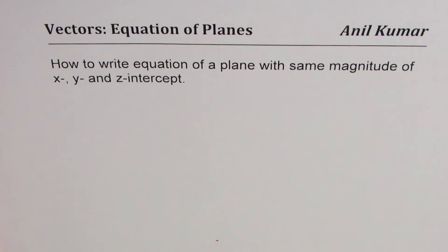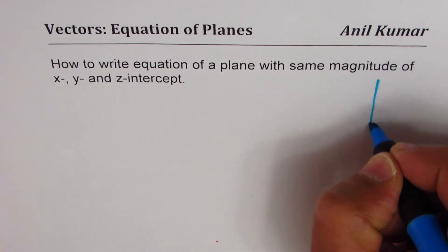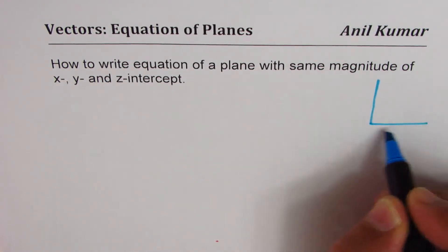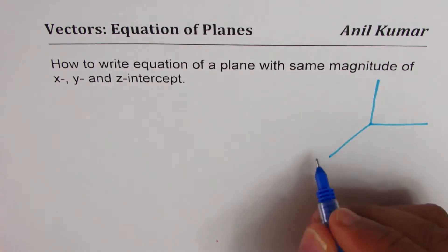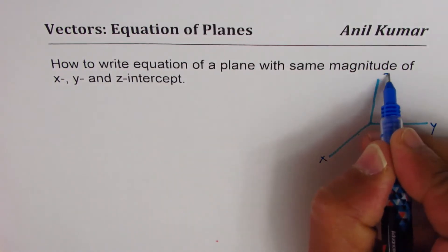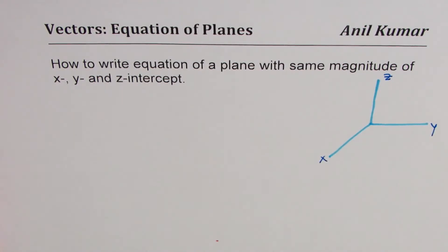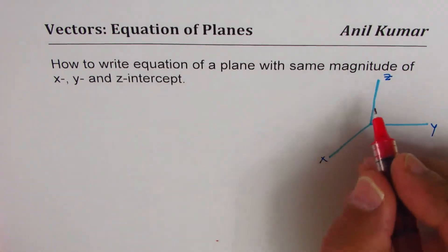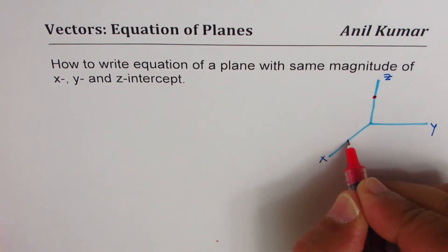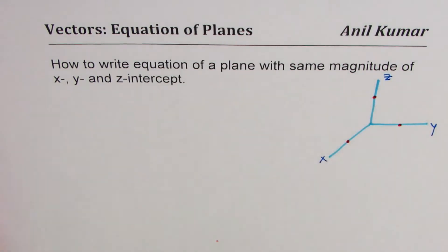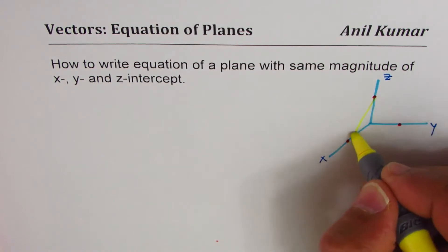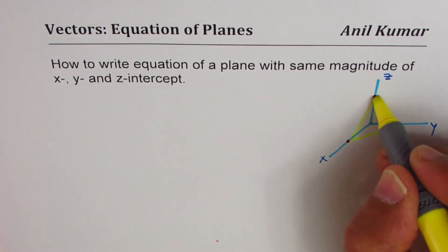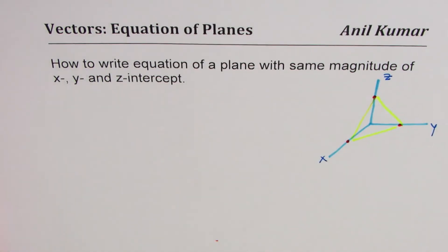Let me first sketch the x, y, z coordinate system. When we say the same magnitude of x, y, and z intercepts, for simplicity I'll take points which are one unit away. So these are my three points, and joining these three points, the triangle you get is actually a plane.